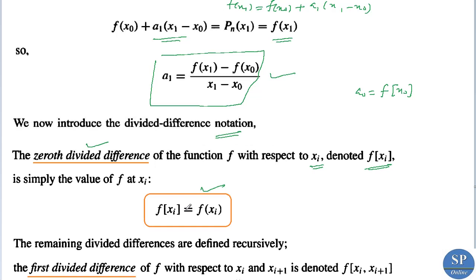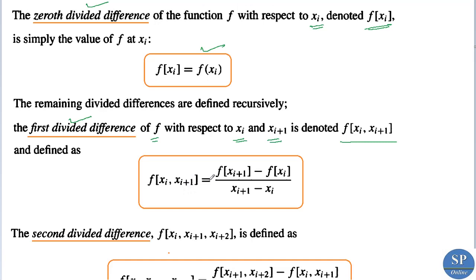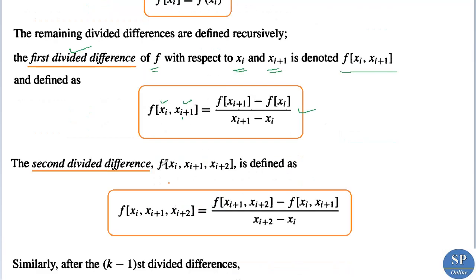The remaining divided differences are defined recursively. The first divided difference of f with respect to xi and x(i+1) is denoted f[xi, x(i+1)] and defined as: f[xi, x(i+1)] = [f(x(i+1)) - f(xi)] / (x(i+1) - xi). The second divided difference with respect to xi, x(i+1), x(i+2) is denoted f[xi, x(i+1), x(i+2)] and defined as: [f[x(i+1), x(i+2)] - f[xi, x(i+1)]] / (x(i+2) - xi).